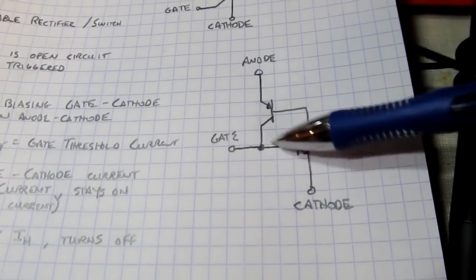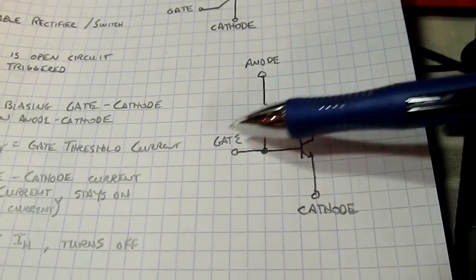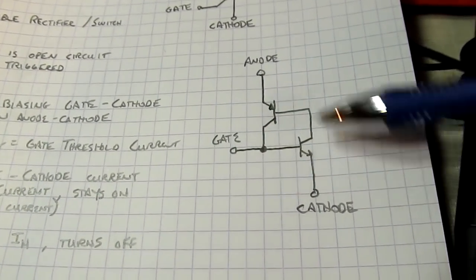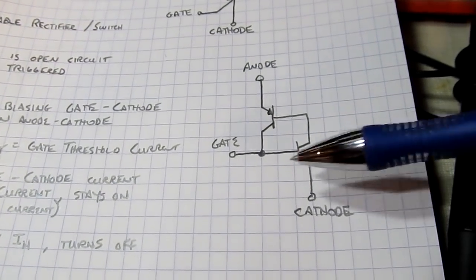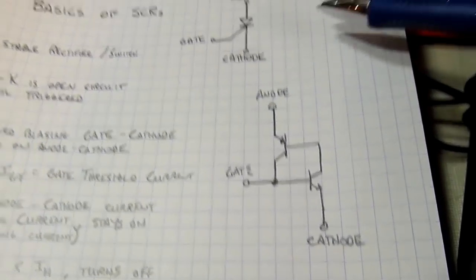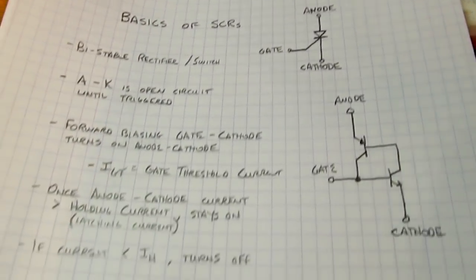So essentially, this self-regenerates and turns on. So even if I remove what I had applied at the gate, we're still going to have current flowing from anode-to-cathode. This is not a perfect analogy, but it certainly shows how an SCR basically works.